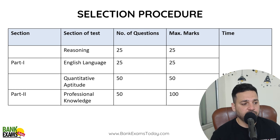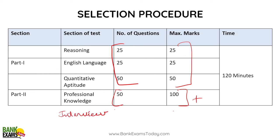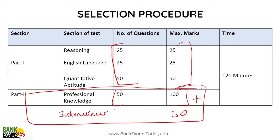This is the selection process. There is Quant, Reasoning and English — 25 marks in English, 25 marks in Reasoning Ability, and 50 marks in Quantitative Aptitude. The marks obtained in Professional Knowledge plus the Interview — which is 50 marks — will be considered for final selection. You need to secure minimum marks from these three sections: Quant, Reasoning and English. Only if you clear these sections will the Professional Knowledge paper be checked.